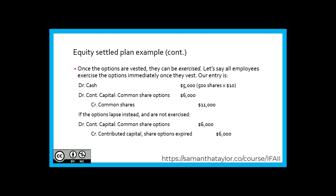Once the options are vested, they can be exercised. If all employees exercise the options immediately once they vest, the entry would be: debit cash for $5,000 (500 shares × $10 each), debit contributed capital for common share options for $6,000 ($2,000 per year × 3 years), and credit common shares for the combined value of cash received plus the common share option amount. However, if the options lapse and are not exercised, we still reverse out the contributed capital for common share options, but keep it in the same bucket — crediting contributed capital: share options expired for $6,000 — to reflect that these options are no longer exercisable.